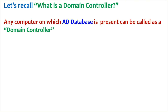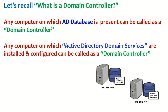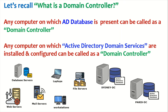Any computer on which the Active Directory database is present, or on which Active Directory domain services are installed and configured, can be called a domain controller. In this example, we have two servers — Sydney DC and Paris DC — which are domain controllers because they host the Active Directory database. We also have member computers such as database servers, laptops, workstations, file servers, and web servers, which are not domain controllers because they don't host the Active Directory database.